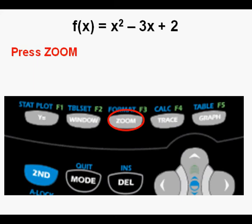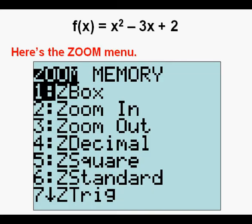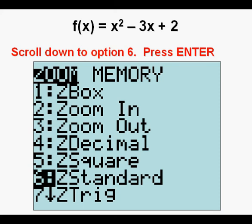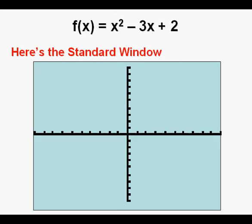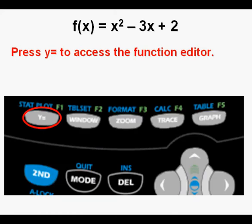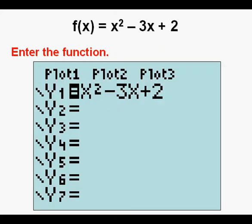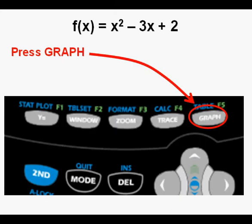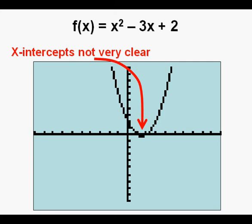Let's look at another function: f(x) equals x squared minus 3x plus 2. When starting over, I recommend setting the window back to standard by pressing zoom 6. Press zoom, go down to option 6, and press enter — you can also just press the number 6. Here's the standard window. Now press y equals to access the function editor, enter the function as shown, and press graph.